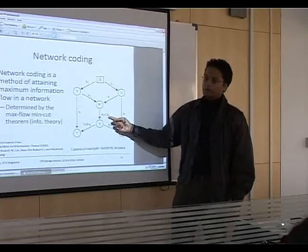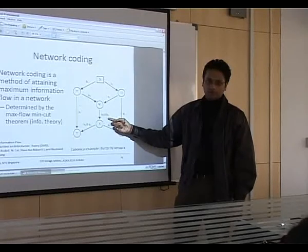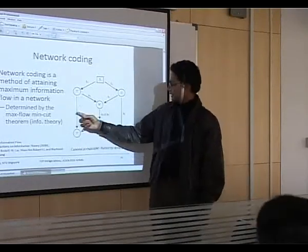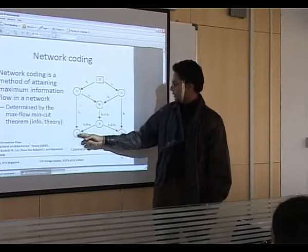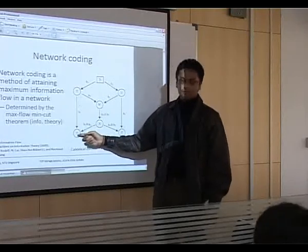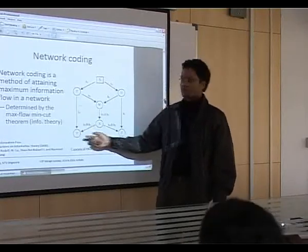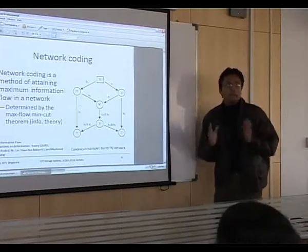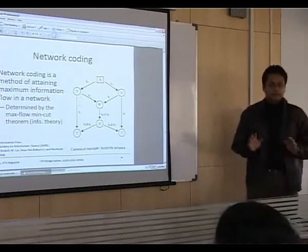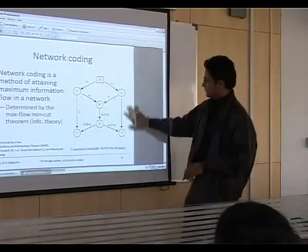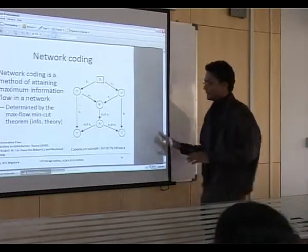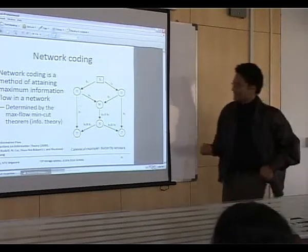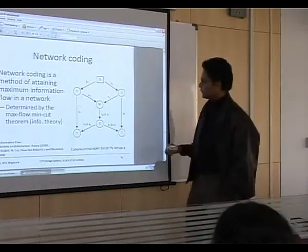However, if X sends the XOR of B1 and B2, then Z, which already has B1, receives B1 XOR B2 and can derive B2. Likewise, Y can derive B1. This is a very simple example of network coding — the example everybody uses because it's the easiest to understand and explain.